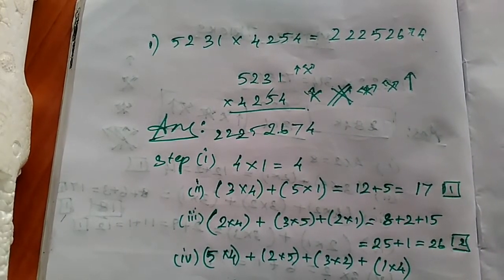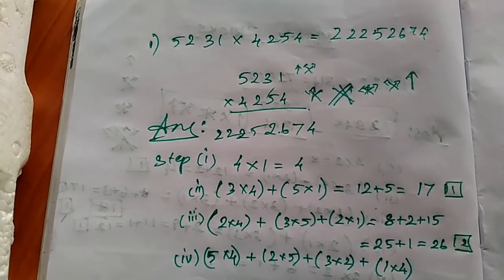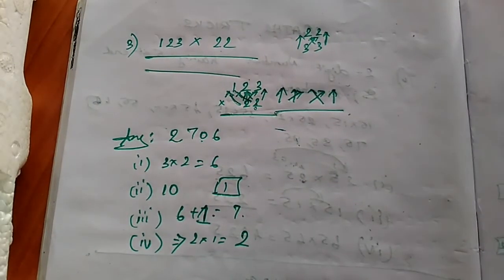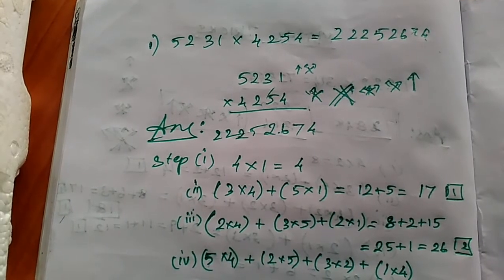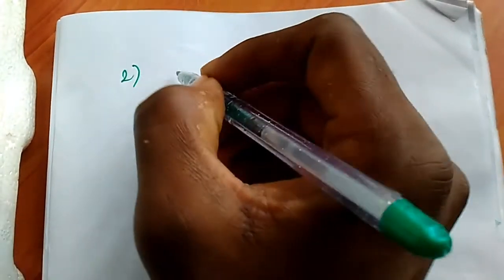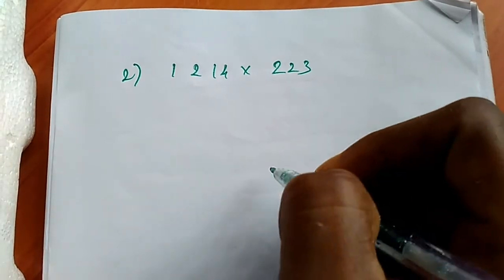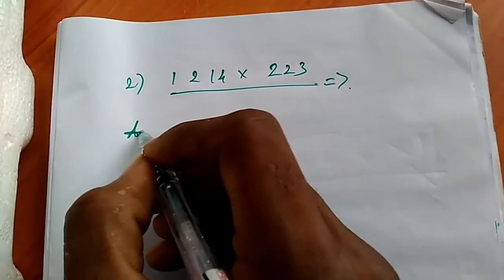Now let's see a four-digit number multiplied by a three-digit number. Let's see one example: 1214 × 823. How many steps do you know? We can work through it directly and apply the same arrow cross method.